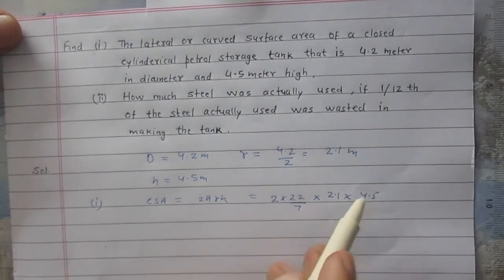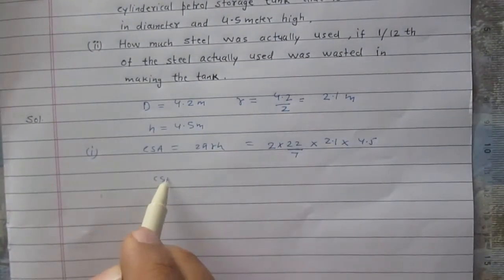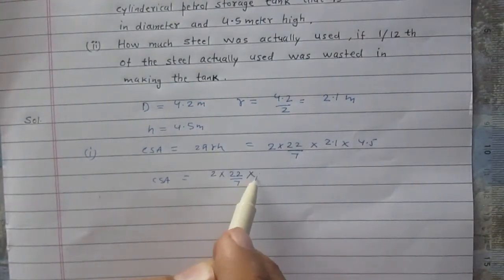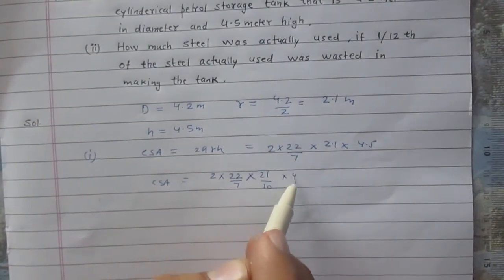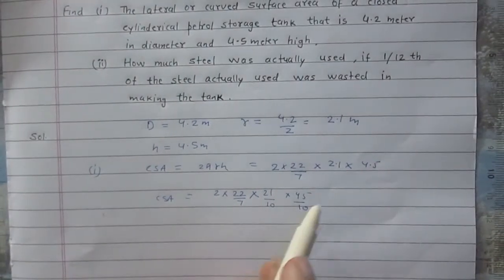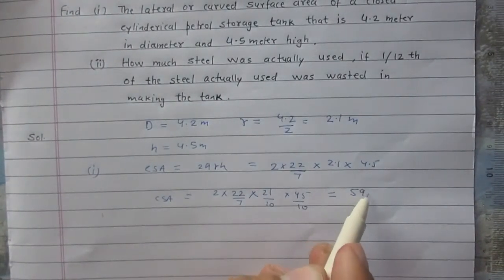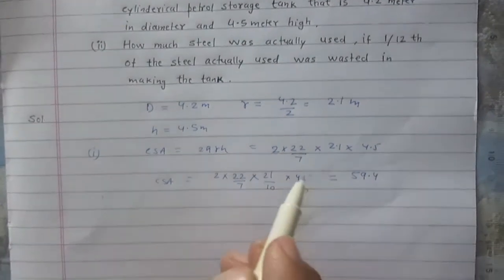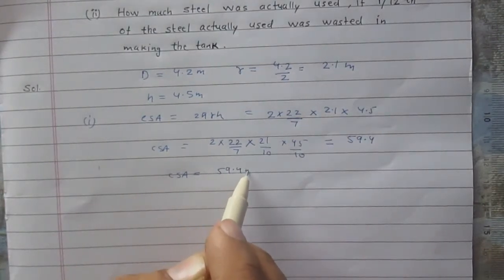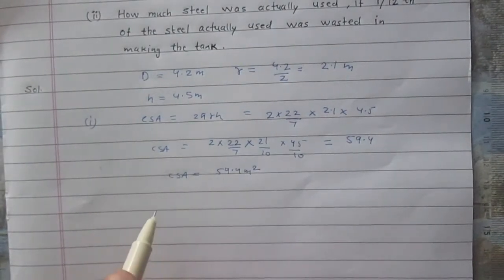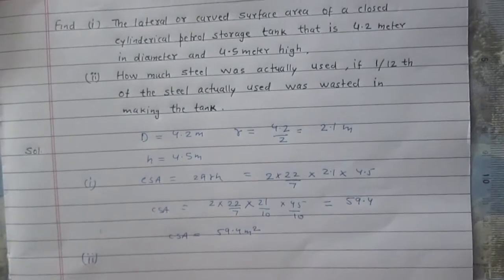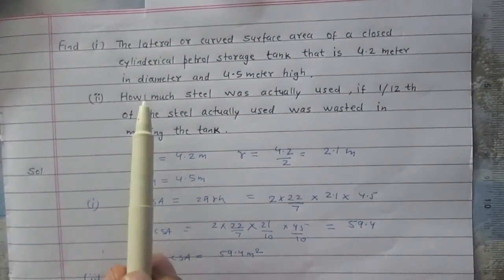It is 2 × (22/7) × 2.1 × 4.5. You can simplify it as 2 × 22/7 × (21/10) × (45/10). After calculation you will get 59.4, so the curved surface area of this tank is 59.4 square meters. In the second part of this question we are to find how much steel was actually used.